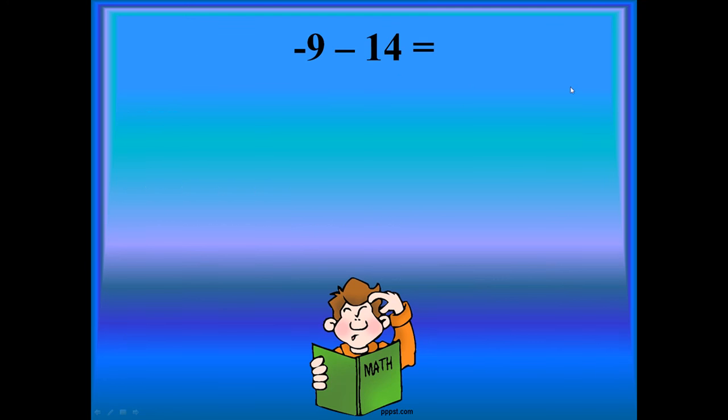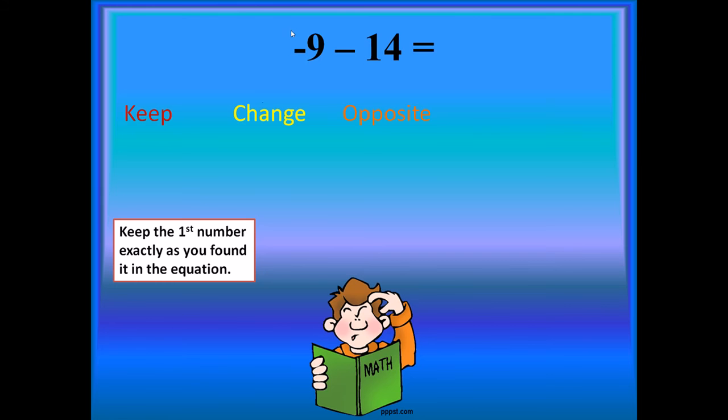Alright. We're going to walk you through a problem. I have negative 9, take away 14. Oh no, it's a subtraction problem. What should I do? I'm scratching my head, although that doesn't look like me at all. Okay. The first rule is keep. What do we keep? We keep the first number exactly as you found it. It is negative 9. You do not touch that negative 9. It stays negative 9.